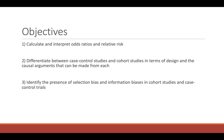The objectives of this lecture are that at the end you should be able to calculate and interpret odds ratios and relative risk. You should be able to differentiate between case control studies and cohort studies in terms of design and the causal arguments that can be made from each. And you should be able to identify the presence of selection bias and information biases in cohort studies and case control studies.